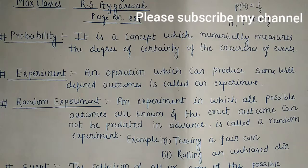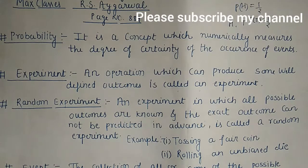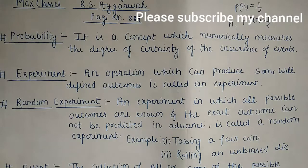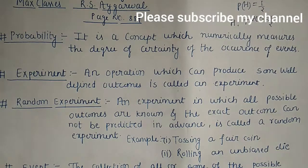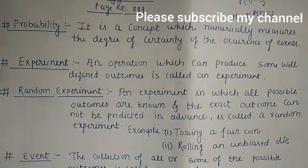It is unpredictable — we might say head will come but we could get tail. Another example is rolling an unbiased die. An unbiased die means any number from one to six can come; nothing has been tampered with. We haven't changed the shape or size of the die to always get six. If we change the shape or size of the die, it becomes a biased die. If nothing is fixed and any number from 1 to 6 can come, it is an unbiased die. Rolling an unbiased die is an example of a random experiment.